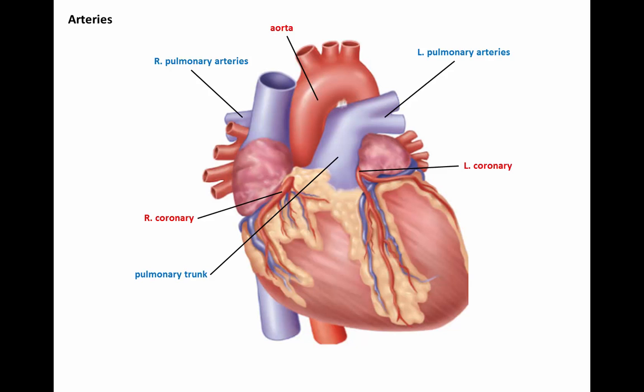Review of blood vessels — arteries of the heart: those transporting oxygenated blood are the aorta and the right and left coronary arteries, supplying oxygenated blood to the heart itself. Those transporting deoxygenated blood to the lungs from the right ventricle are the pulmonary trunk, which then branches into the right and left pulmonary arteries.